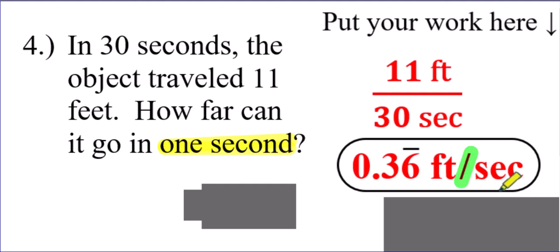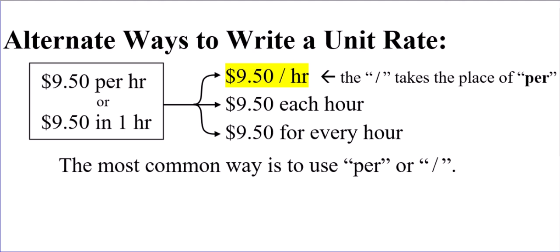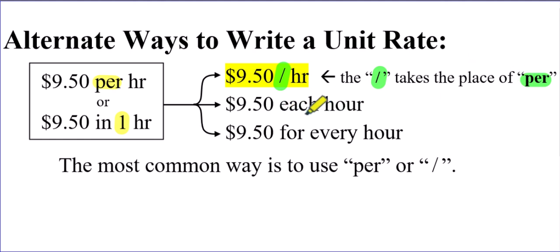I'm putting a diagonal slash instead of the word per on number four. Let's talk about some alternate ways of how you can write a unit rate. The ways we've talked about so far are using the word per, or sometimes using 'one hour' for the second part. A diagonal slash takes the place of the word per — so $9.50/hour means $9.50 per hour. You can also say $9.50 each hour, or for every hour. These are some alternate ways of writing a unit rate.